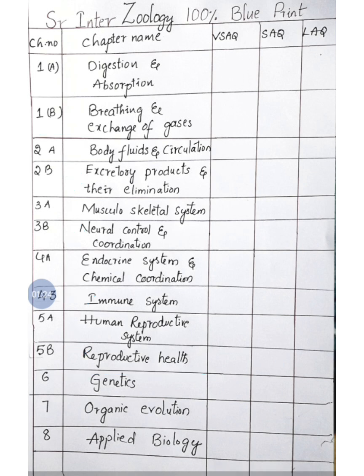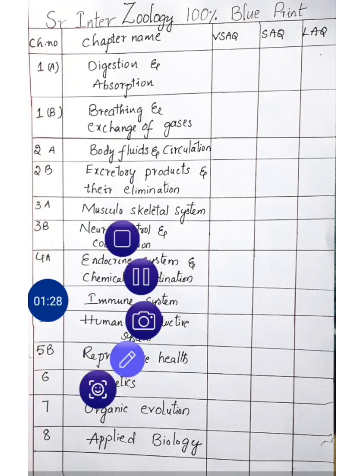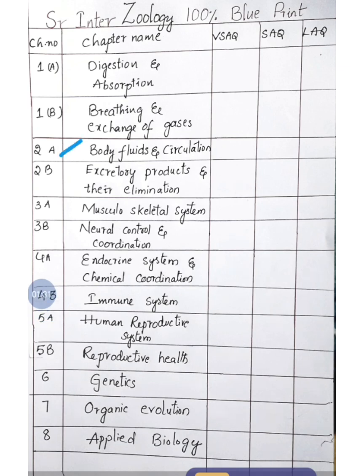For long answer questions: from 2A, Body Fluids and Circulation, we study the structure of the human heart and its working mechanism — there is a chance of asking one long answer question from these two topics. One more long answer can come from Excretory Products and Their Elimination — the chances of asking about nephron structure or the working mechanism of nephron are there.